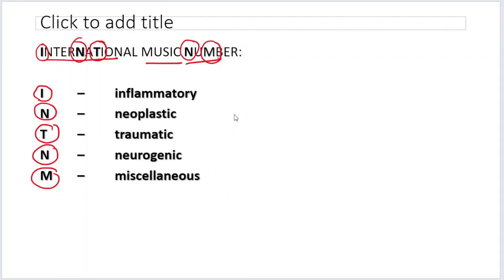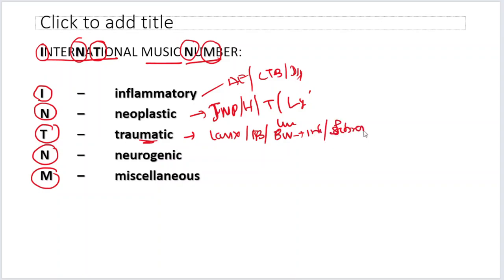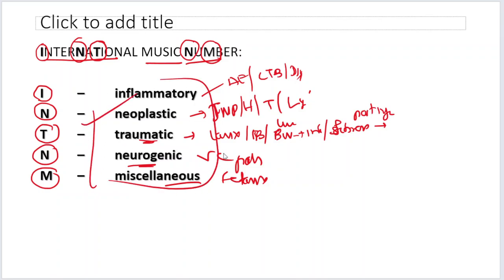Quick revision: Inflammatory — acute epiglottitis, laryngotracheobronchitis, diphtheria, etc. Neoplastic — juvenile multiple papillomatosis, hemangiomas, masses of the trachea, lymphoma in the mediastinum. Traumatic — trauma to the larynx, foreign body, burns causing laryngeal edema, post-intubation (iatrogenic), post-injury fibrosis and stenosis. Neurogenic — vocal cord palsy. Miscellaneous — tetanus. If you can write this down, you will get your marks.